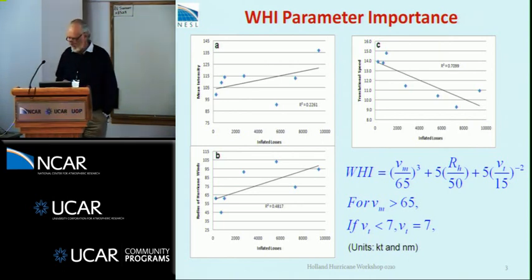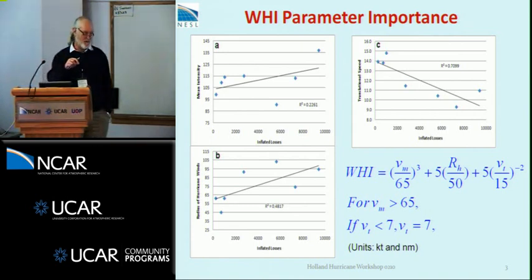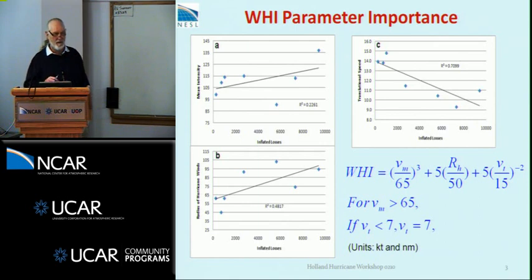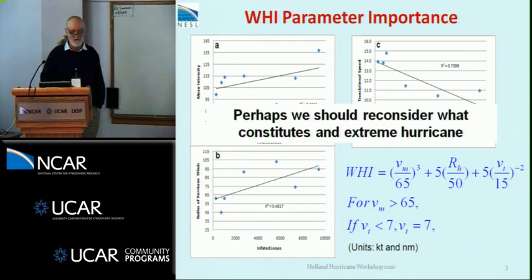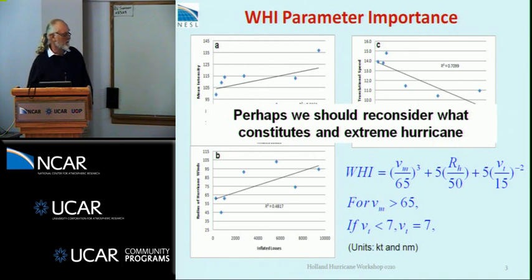We're extending this to coastal regions at present. It's a lot more difficult for coastal regions — if you've got a town like New Orleans, it matters where the hurricane landfall is relative to that. But just looking at recent history, it's actually size and translation speed that have been far more important than intensity in pretty well all damage of any consequence, aside from the odd small one like Charlie. I think we should perhaps reconsider what constitutes an extreme hurricane, and we really need to start looking at how models predict size and translational speed.